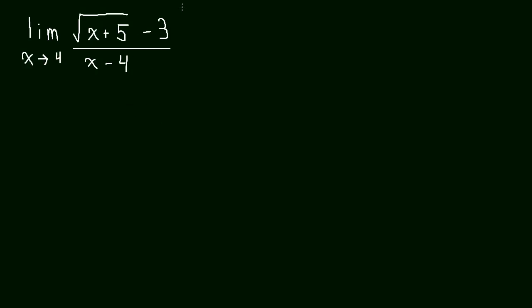So if we try and plug 4 in here, we're going to end up with 0 over 0 again. It doesn't take much to see that. If you plug into the numerator, you're going to get the square root of 9, which is just 3, and you're going to end up with 3 minus 3. In the denominator, you're just going to end up with 4 minus 4. So if you try and plug it in, you're going to get 0 over 0.